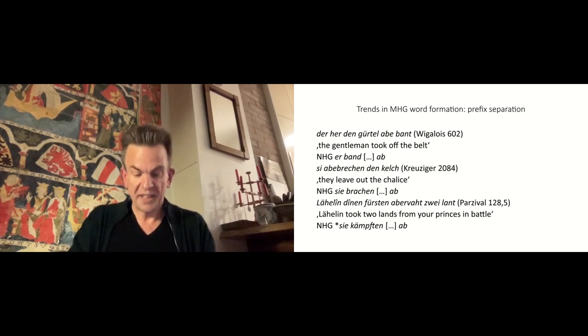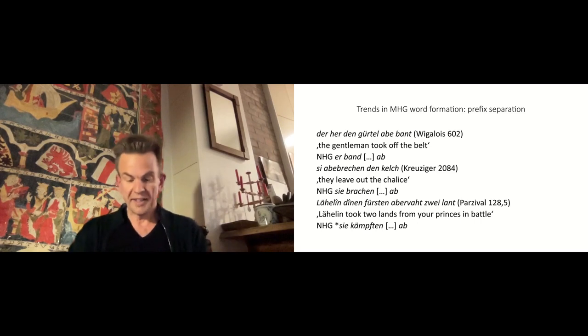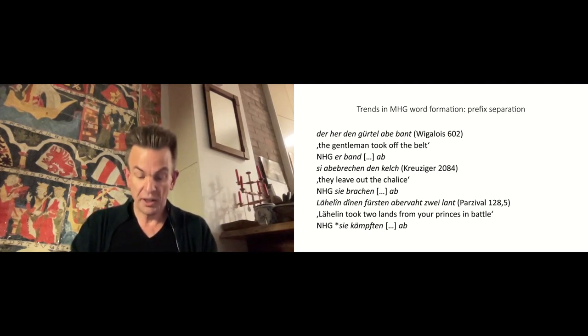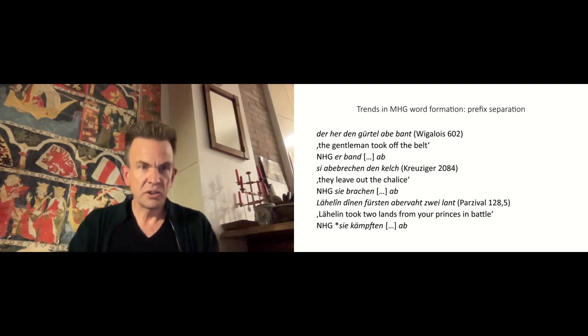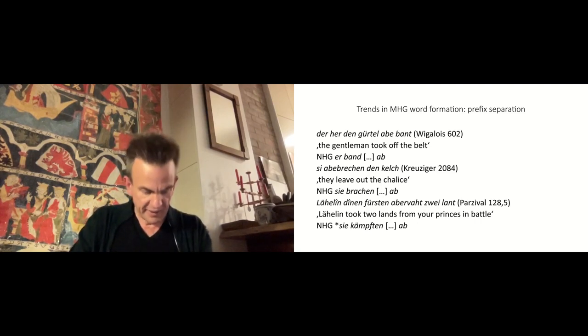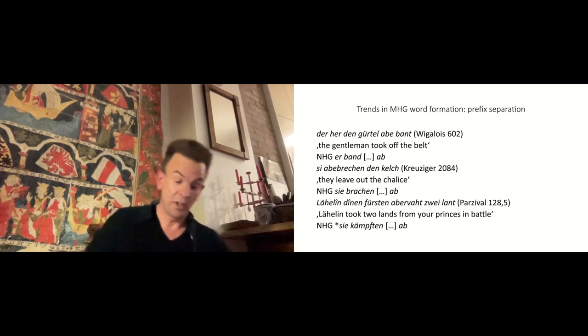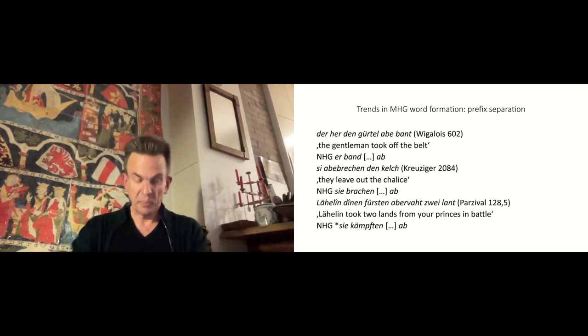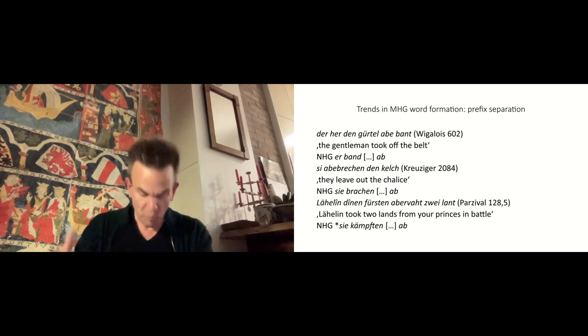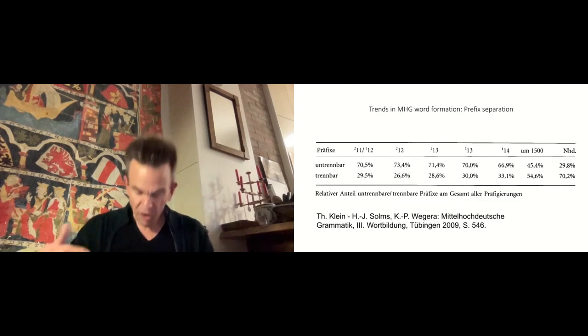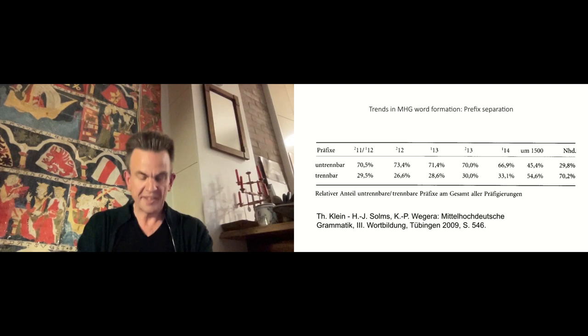The system of Middle-High German verbal prefixation is fully functional, but also new and thus potentially endangered in its integrity. This makes plain a striking difference between Middle-High German and contemporary verb derivation. When reading Middle-High German texts, one encounters several passages like the following. Der Herr den Gürtel abbeband, or Sie abbebrechen den Kelch, or even Lächelin dienen Fürsten aberfach zwei Land. From a contrastive point of view, the common features between these passages are the formations with an inseparable prefix, where in the present language there should be formations with a separable prefix. These specific observations are an indication of a general trend.